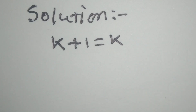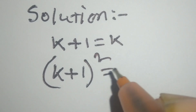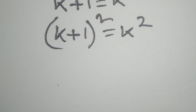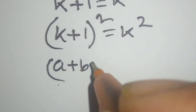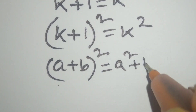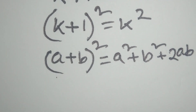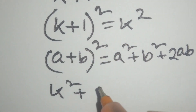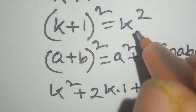Now we will take a square on both sides: k plus 1 whole square is equal to k square. We know that a plus b whole square is equal to a square plus b square plus 2ab. According to this formula, we can write this line as k square plus 2k times 1 plus 1 square is equal to k square.